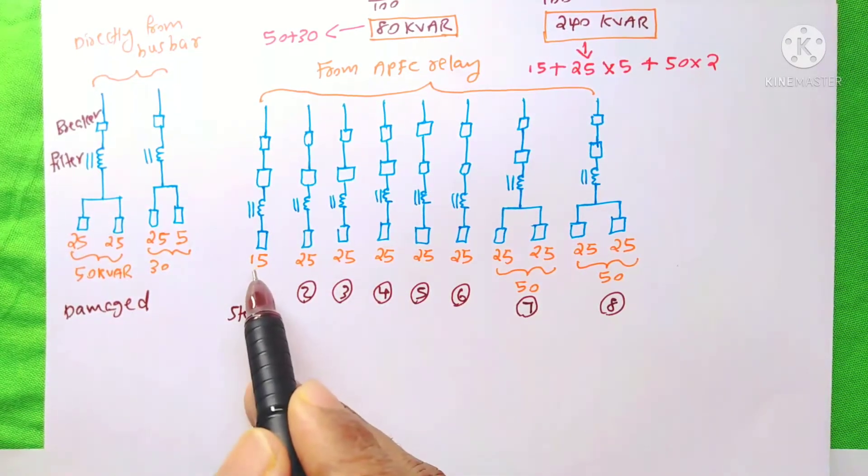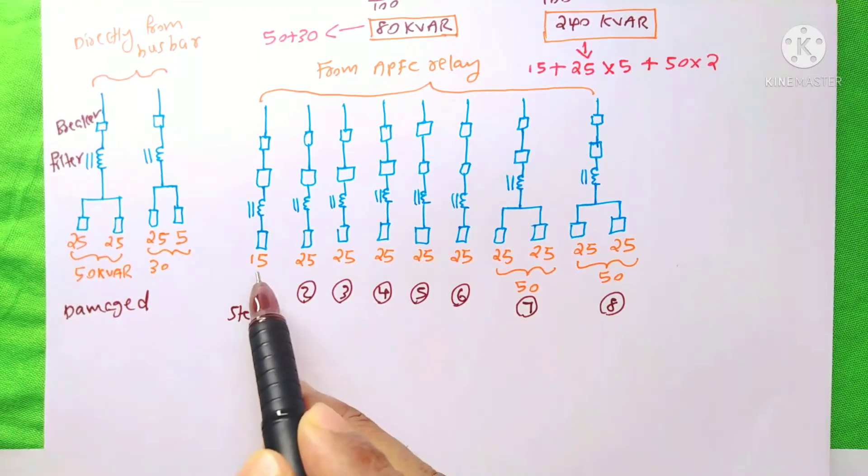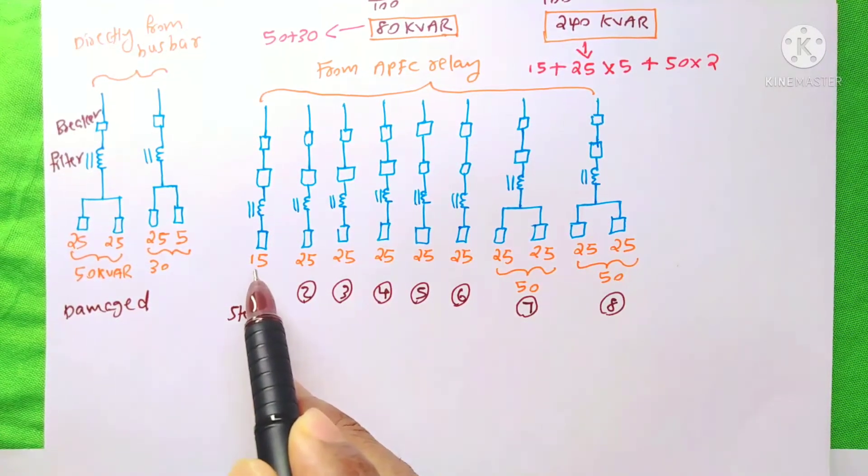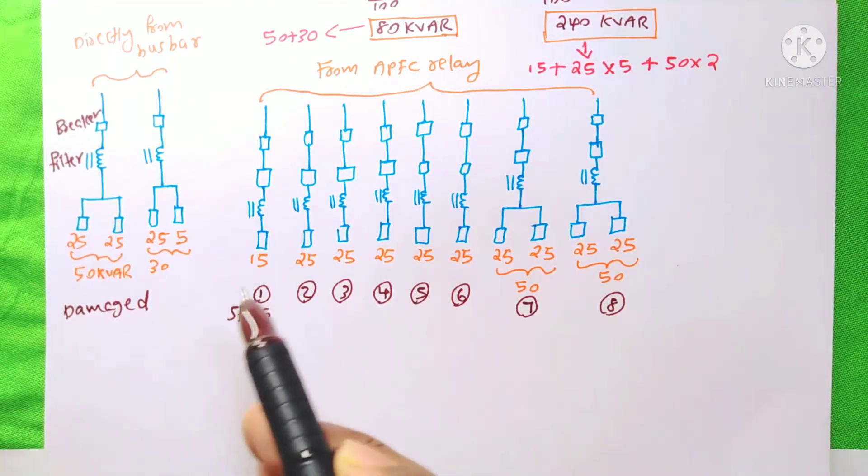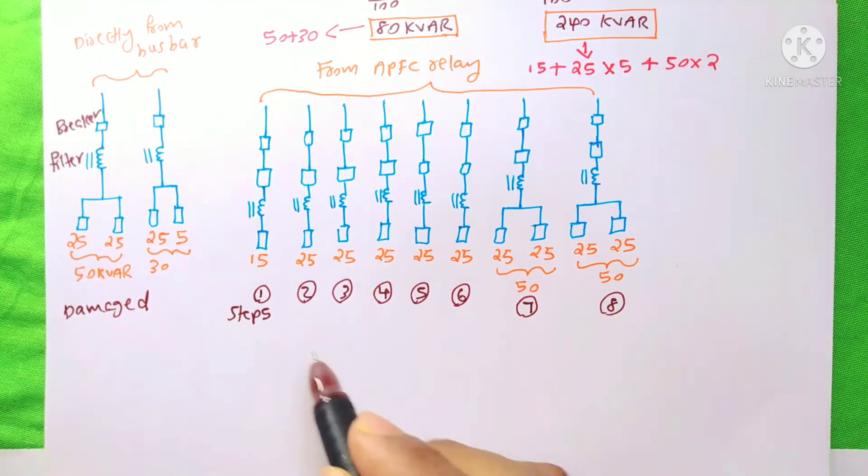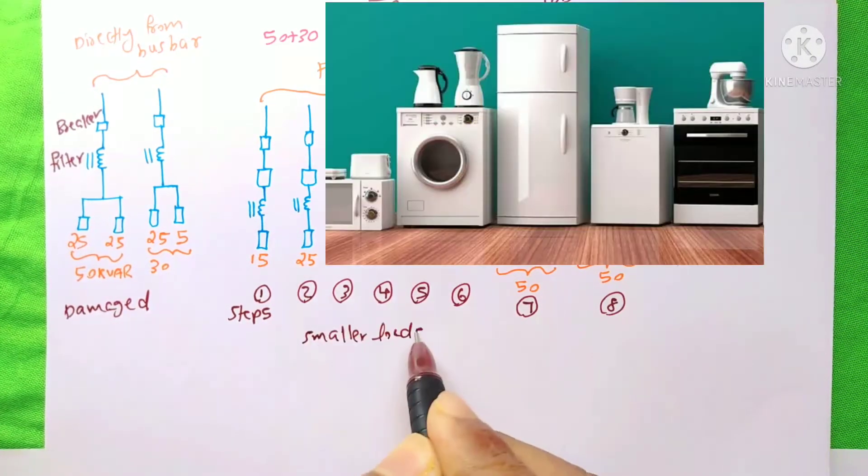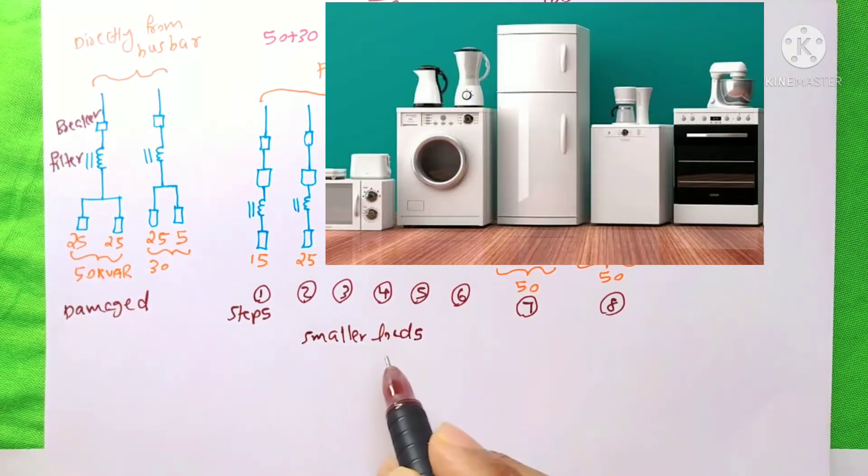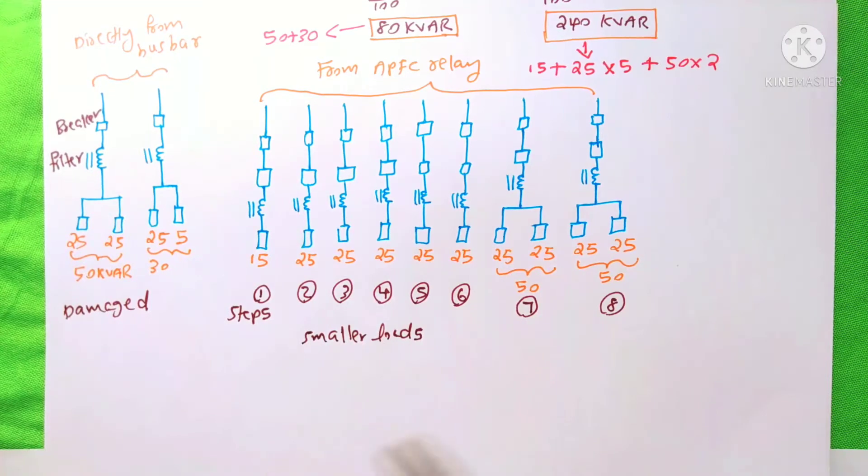Suppose, if you connect here the very big capacitor bank, then to turn that on, you need the high requirement of the kVAR. So the smaller loads which need the small power factor correction will not get the actual power factor correction.